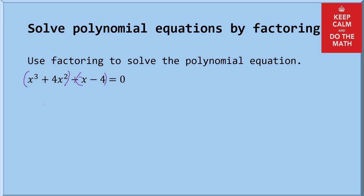So now we'll factor out of the first term, the greatest common factor of x squared. And that leaves me with x plus 4.